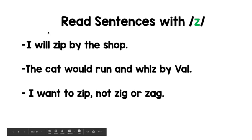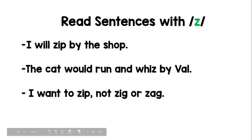On this page, you're going to read the sentences with Z in them. Read the first sentence — make sure you are pointing to the words. Then the second sentence and the third sentence. If you do not know a word, make sure to sound it out.